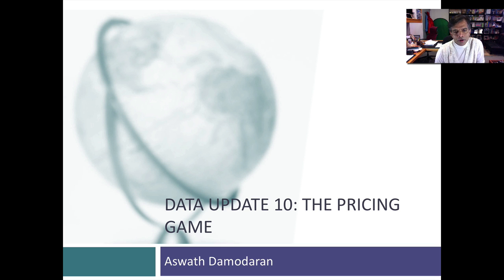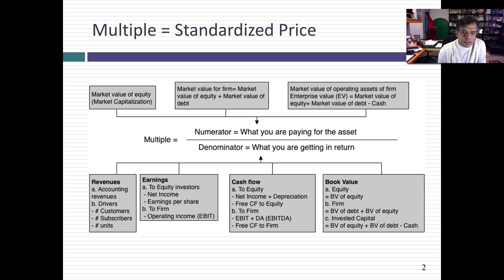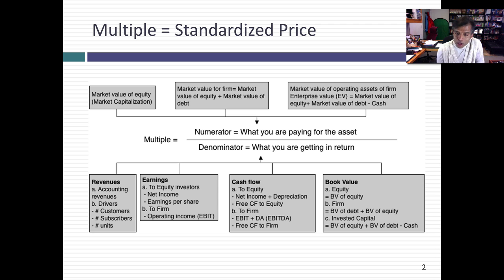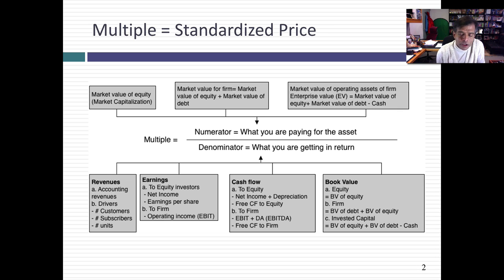In order to compare prices across stocks, what you very quickly recognize is absolute prices cannot be compared. Absolute prices are arbitrary. Let's say you have a stock trading at $100 per share. You can make it trade at $10 per share by doing a 10-for-1 stock split, or a dollar per share by doing a 100-for-1 stock split. Berkshire Hathaway is not an expensive stock just because it's trading at $265,000 per share, and a penny stock is not cheap just because you can buy it for three cents a share. So in order to compare pricing across companies, you have to standardize the price. A multiple is just a standardized price.